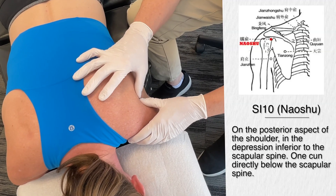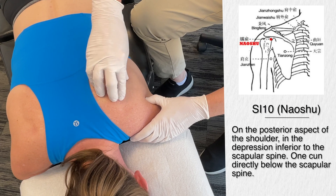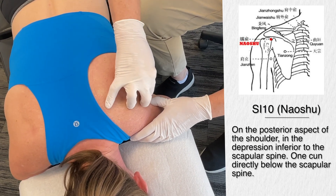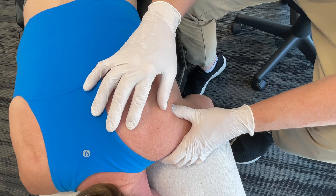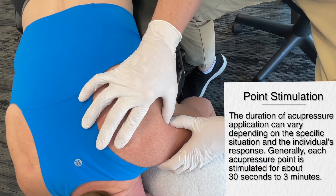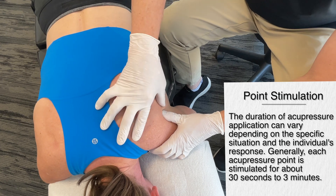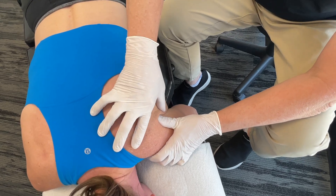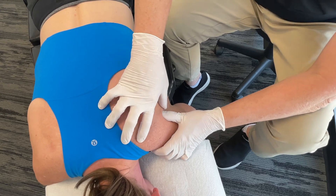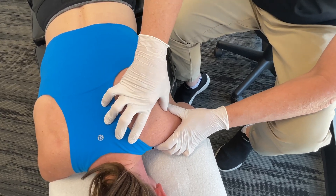The next point is small intestine 10. This is found on the posterior aspect of the shoulder in the depression inferior to the scapular spine — one cun directly below the scapular spine. It's quite sensitive right there. We're going to stimulate this for about 30 seconds to a minute, working the area out quite a bit — not just pushing in, but really stimulating it.